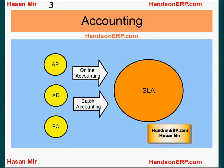You can create accounting in subledgers using one of two methods. In the first method you will create accounting for only that particular transaction — you pull up that transaction on the screen, go into actions, and choose create accounting. This is called online accounting. Normally you will run the batch accounting method, which is performed by calling a program called create accounting, owned by the subledger accounting module. This program will create accounting for all transactions in that particular subledger that are not yet accounted.